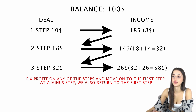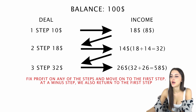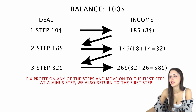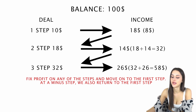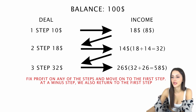You can make a screenshot of this picture and refer to it in your trading. Suppose our initial balance is $100. The first trade is $10 and the income we get is $8. Let's add the first stake and income — we get $18.